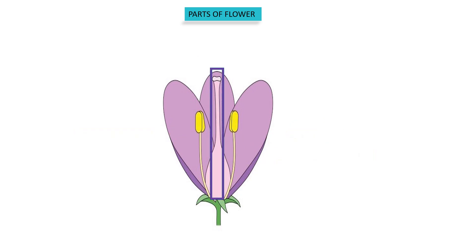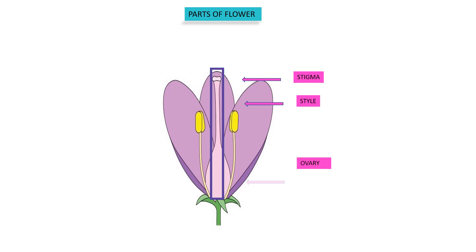The fourth whorl is the female part of the flower, which is centrally located. Each female part has three parts: stigma, style, and ovary. The stigma serves as the landing place for pollen grains. The style connects the stigma to the ovary. The ovary is the swollen basal portion, composed of one or many carpels.